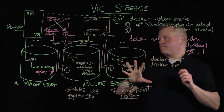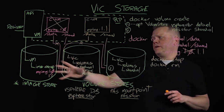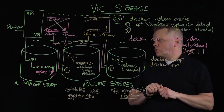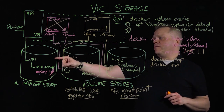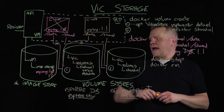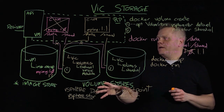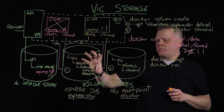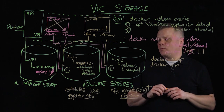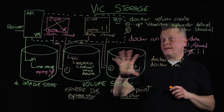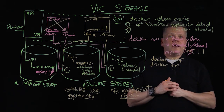To recap: we talked about the different types of storage. The image store is mandatory — it can be any datastore in your vSphere environment, existing or new — and we use it for the VM running directory as well as the image cache. We have two types of volume stores: the vSphere datastore type is great for private data internal to a specific container, and the NFS mount point is great when you need to share data between multiple running containers. Thank you for your time and have a great day.